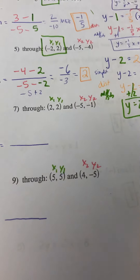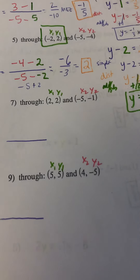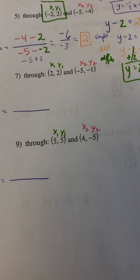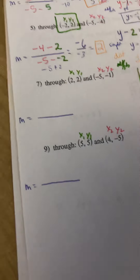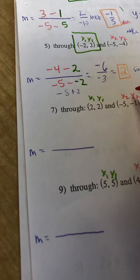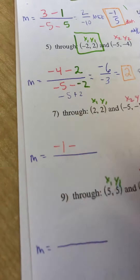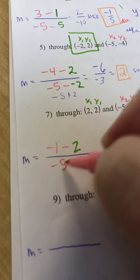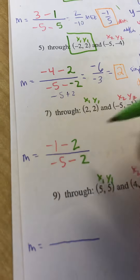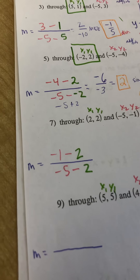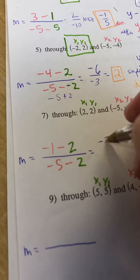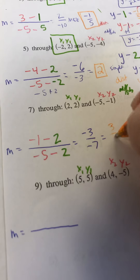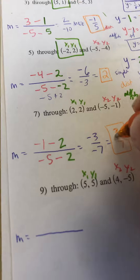Here are the next two — maybe pause and try them yourself. See if you can find the slope and the line. Okay, hopefully you tried that. On number 7, we've got y2 is negative 1, minus my y1, which is 2, and x2 is negative 5, minus 2. Hopefully you got negative 3 over negative 7 for the slope — a negative over a negative is a positive — so the slope is positive 3 sevenths.